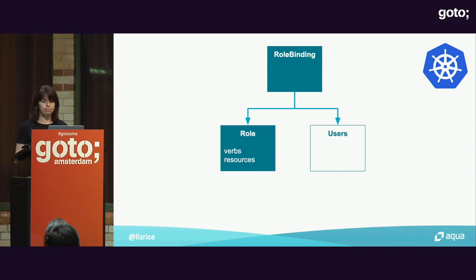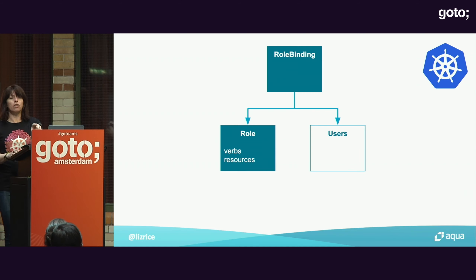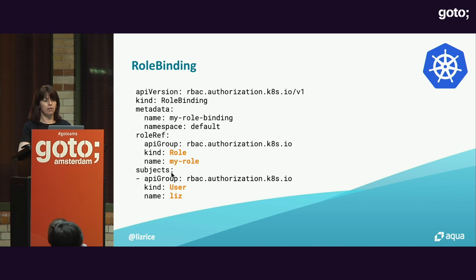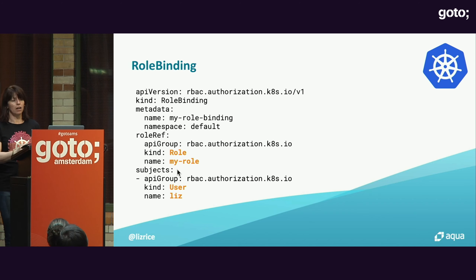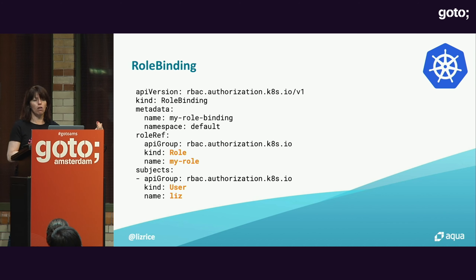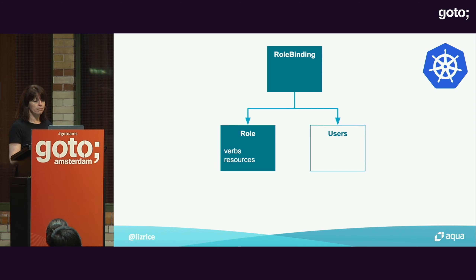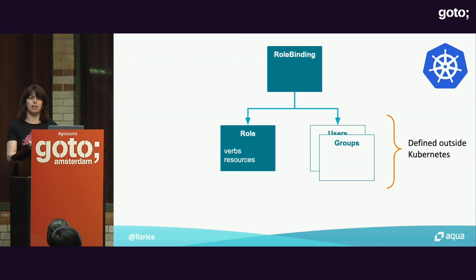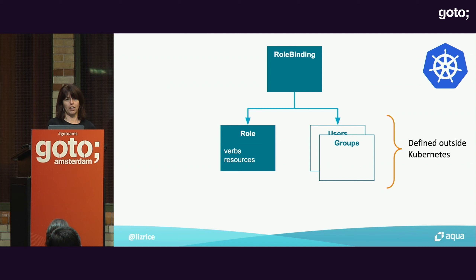It's not necessarily just a user — it's called a subject. The subject could be a user or a group, much like we have groups in Linux. But users and groups are not actually first class objects in Kubernetes. There's no such thing as a user object in Kubernetes, because Kubernetes expects that your users and groups are defined somewhere else — maybe an enterprise LDAP directory.